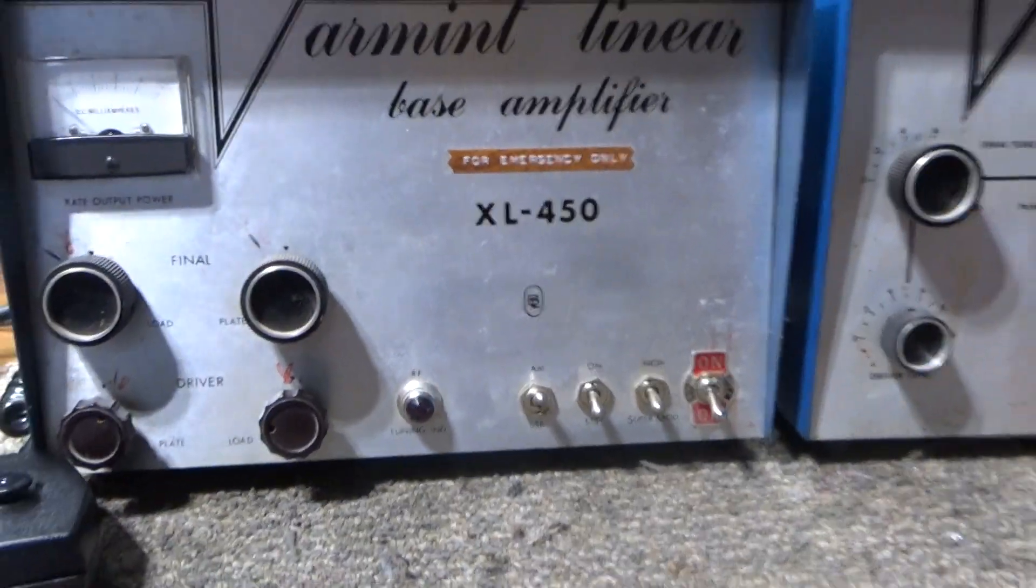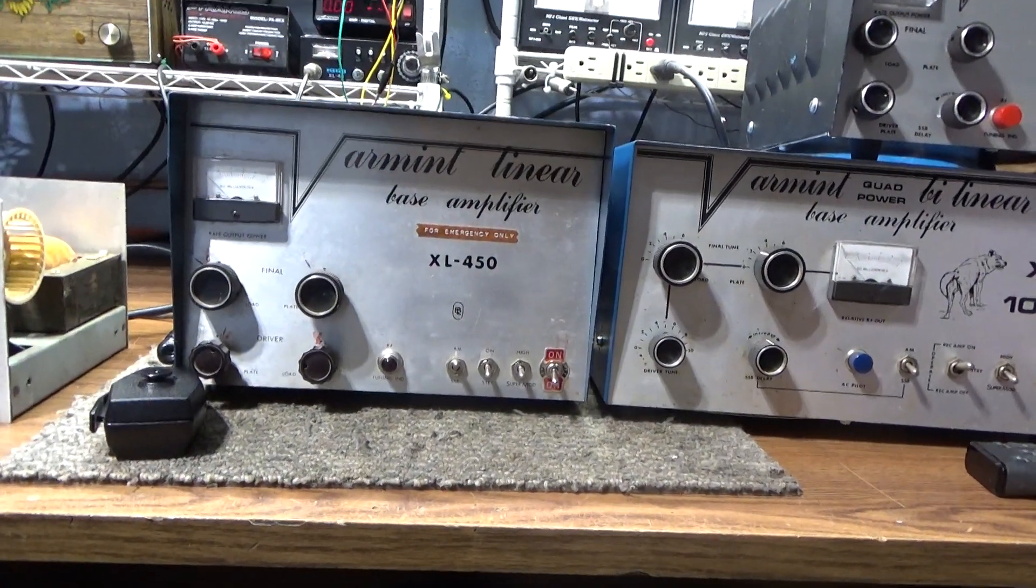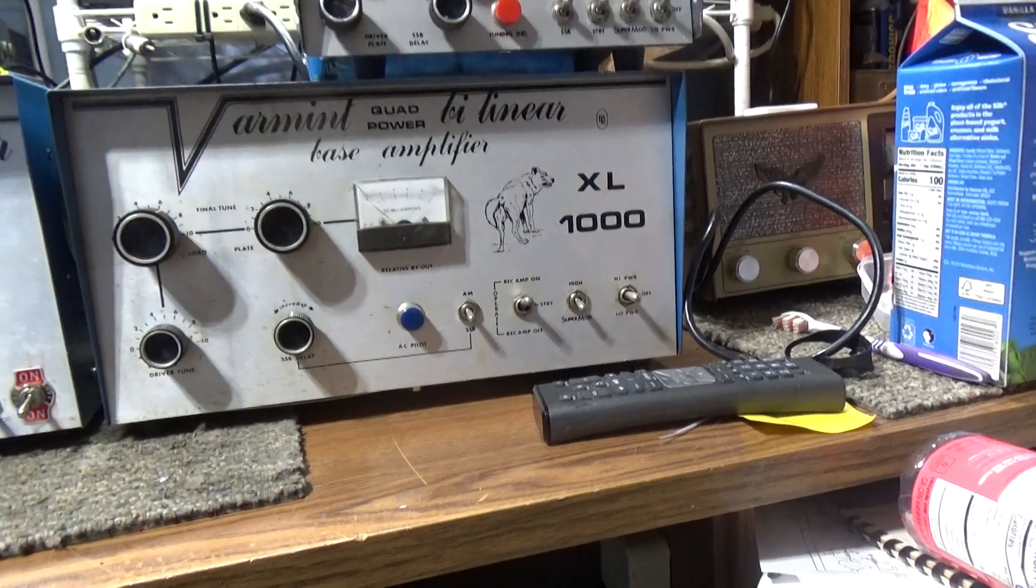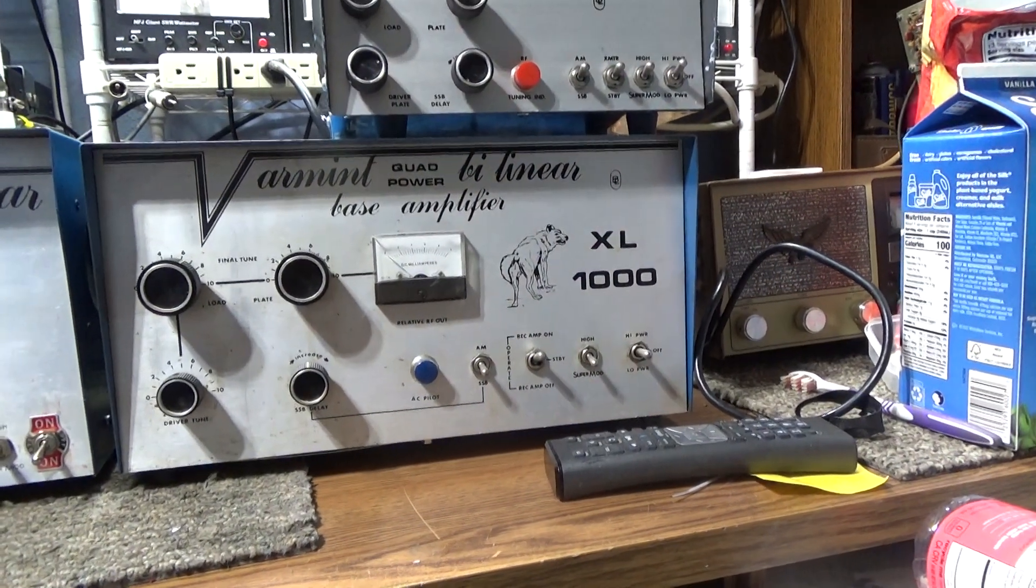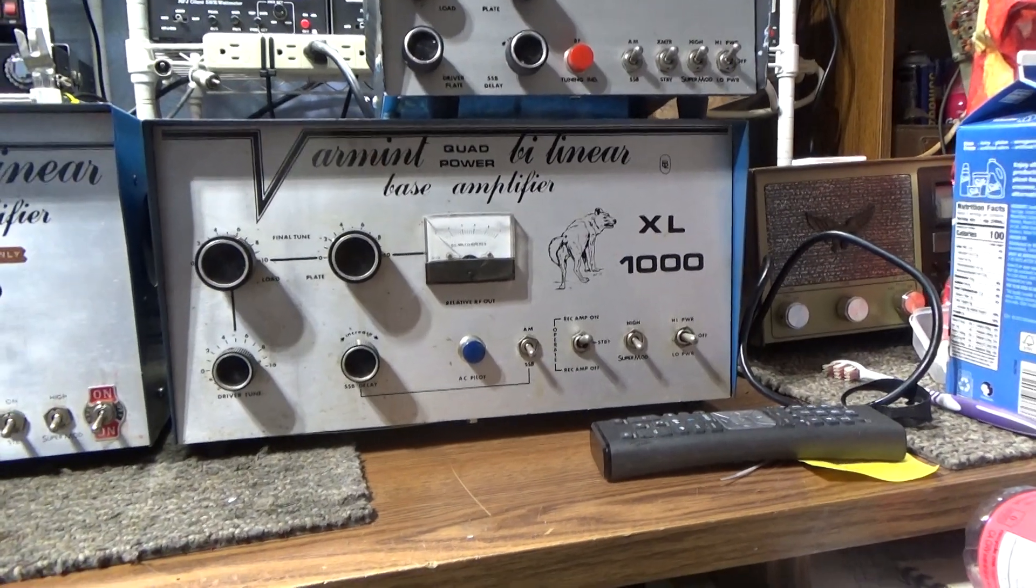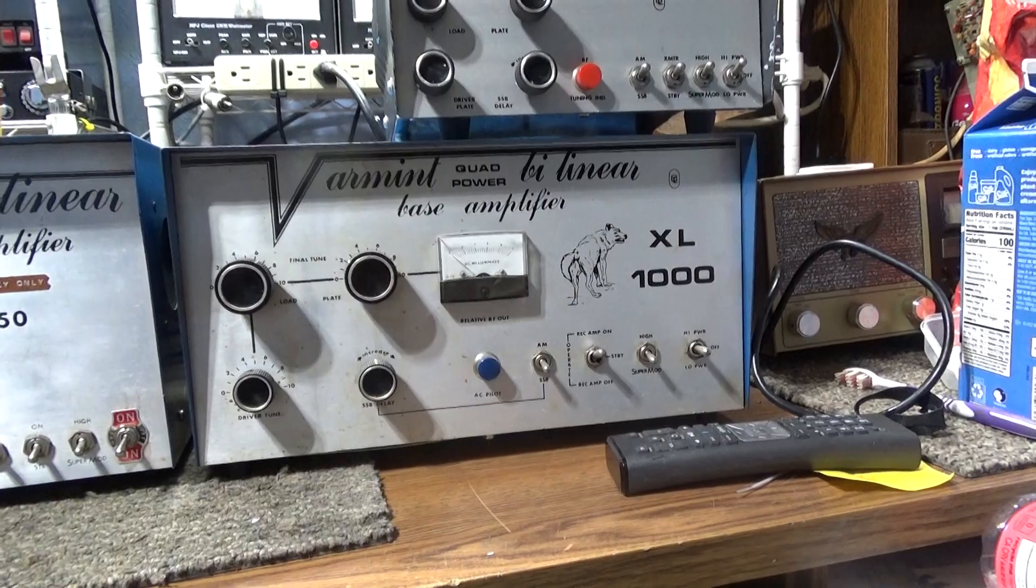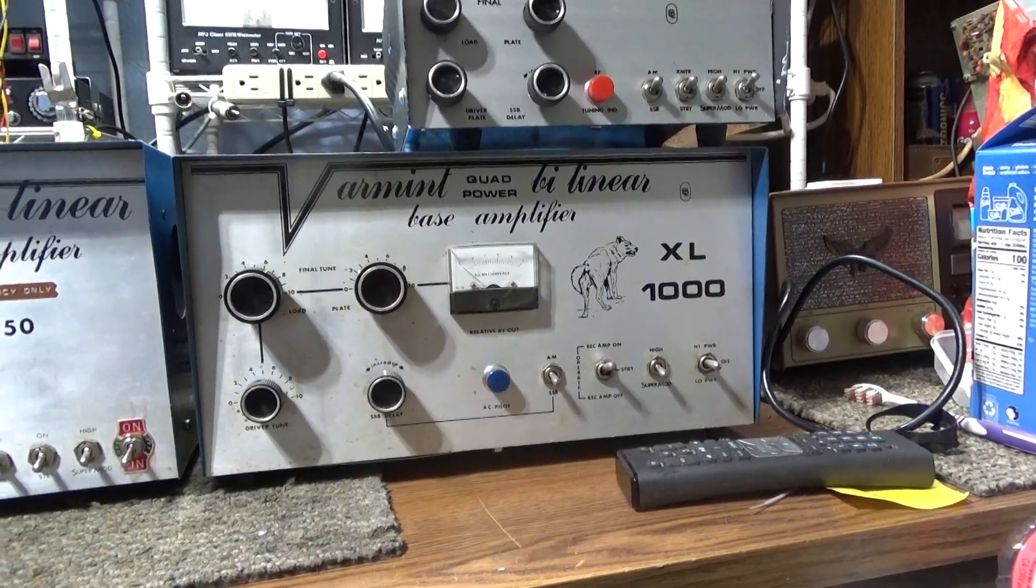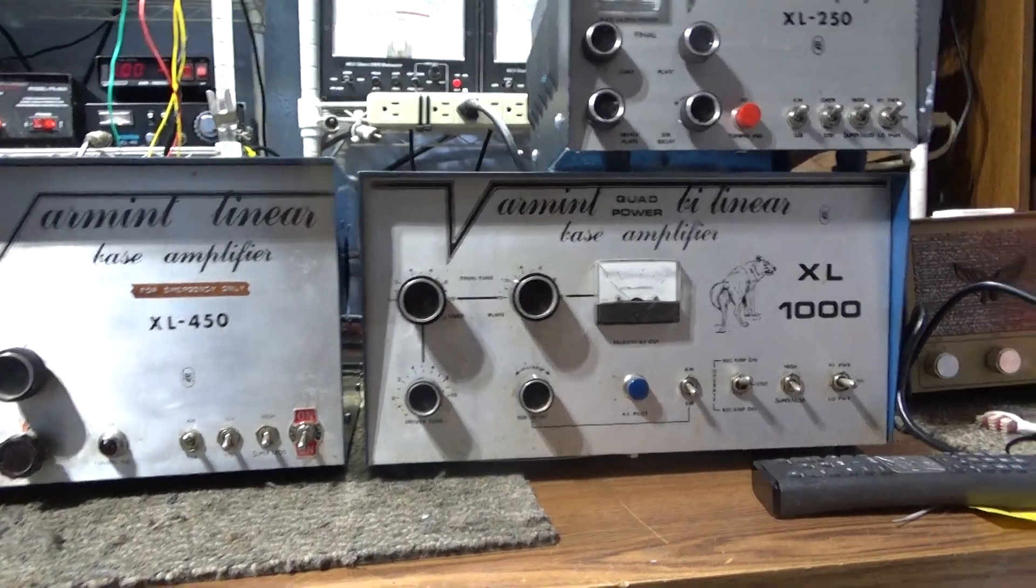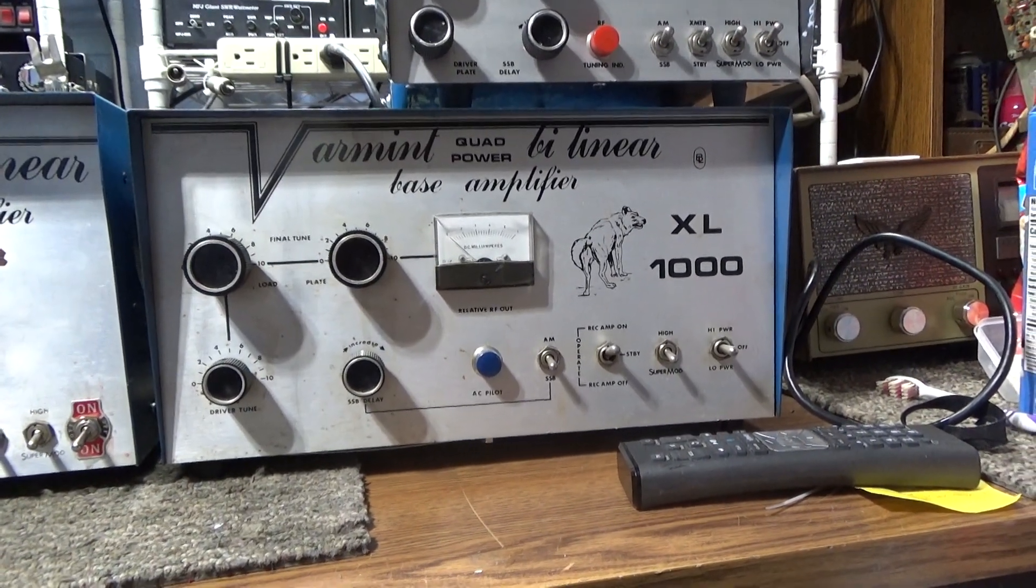After the 450 they have the 600, which I don't have and can't find any information on the net about. I did see that the 600 is two driving four. The 450 was one driving three, the 600 is two driving four, and the big bad 1000 is three driving six.